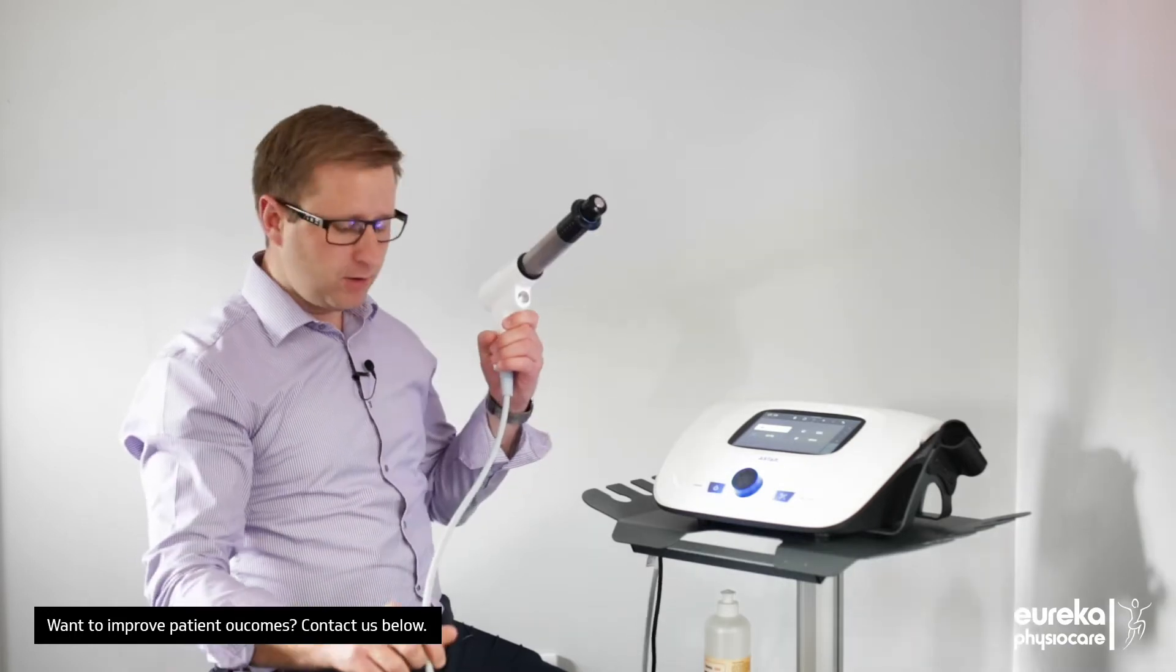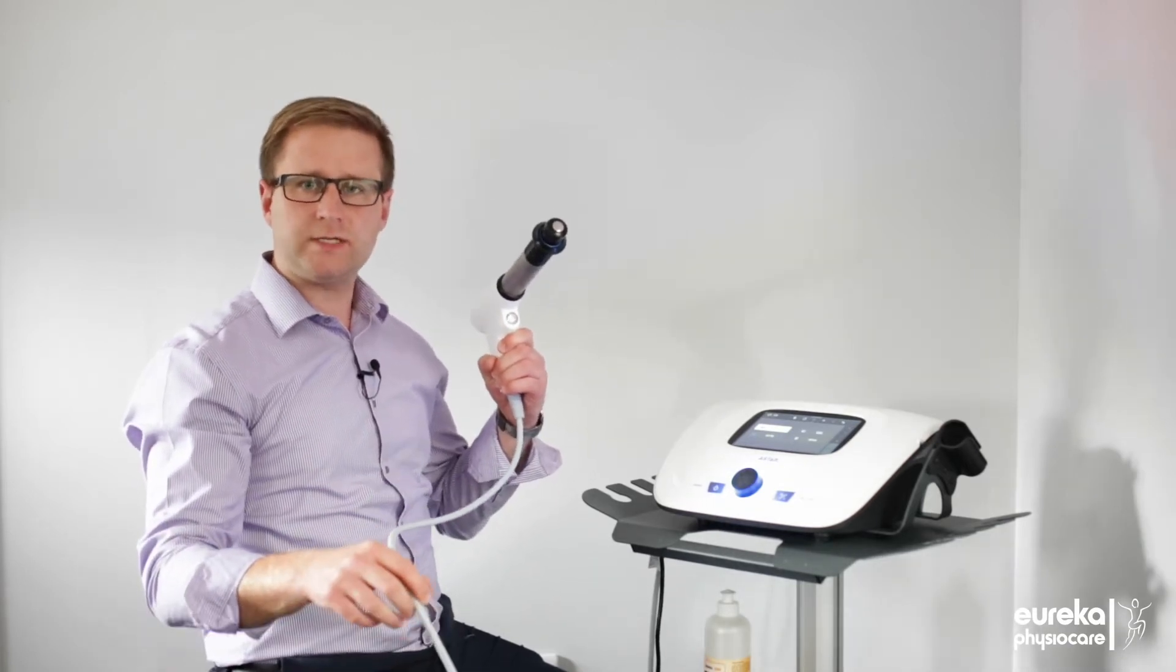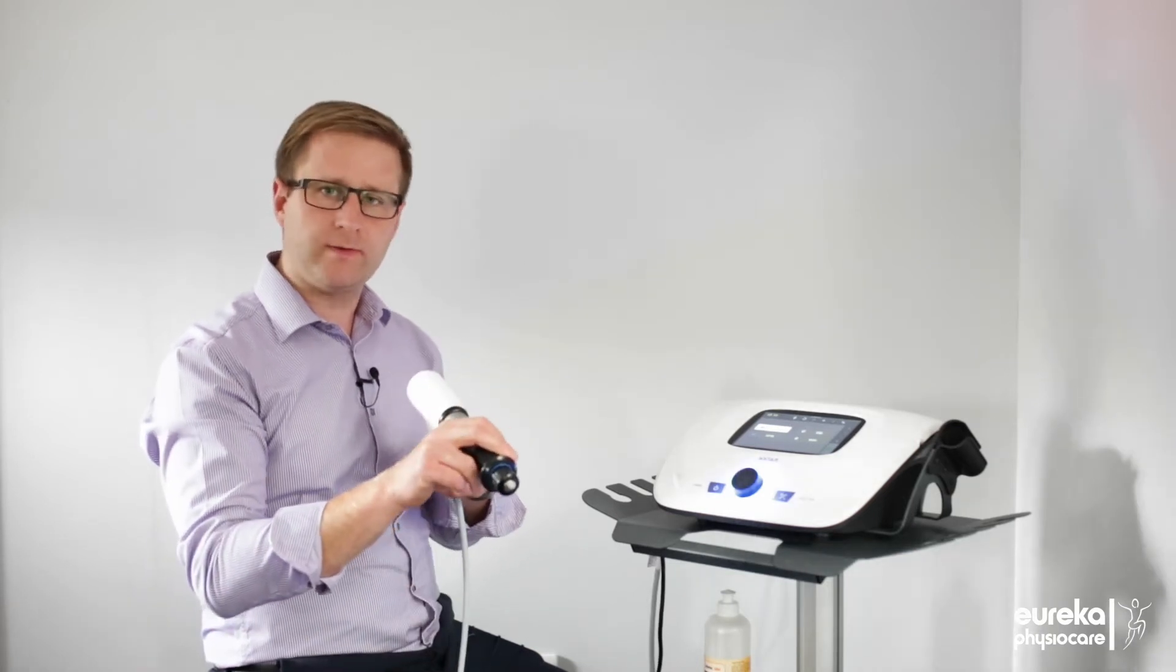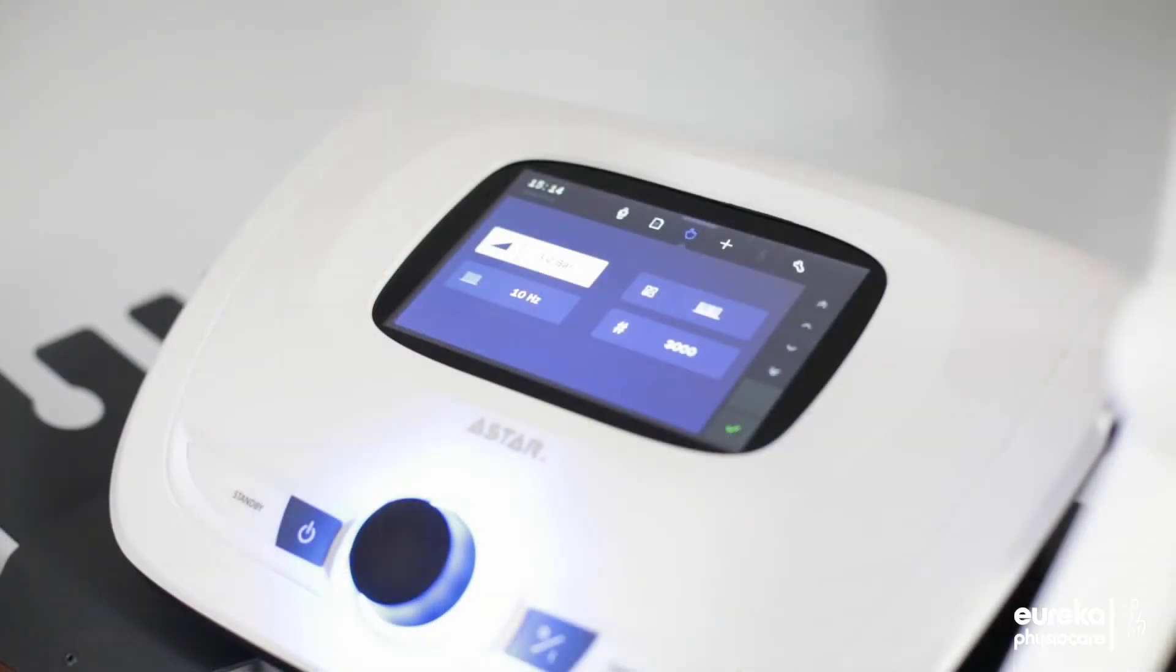The gun also has a very long cord which makes it a very long reach so whichever side of the patient you're wanting to treat or move, it allows you to do that. We have here a very clear seven inch LCD screen which means that it can be very clearly seen around the clinic room and whilst you're treating the patients.